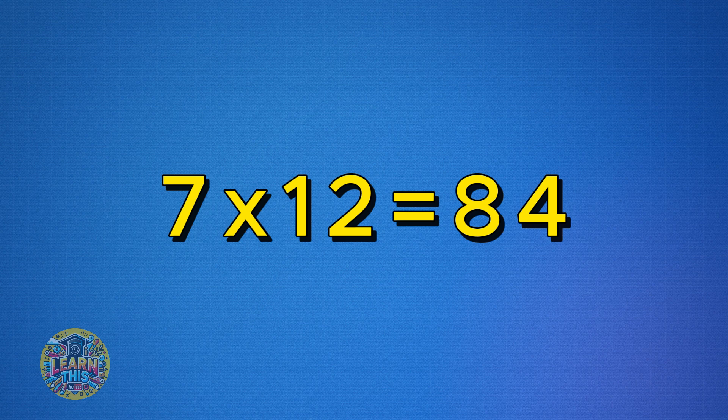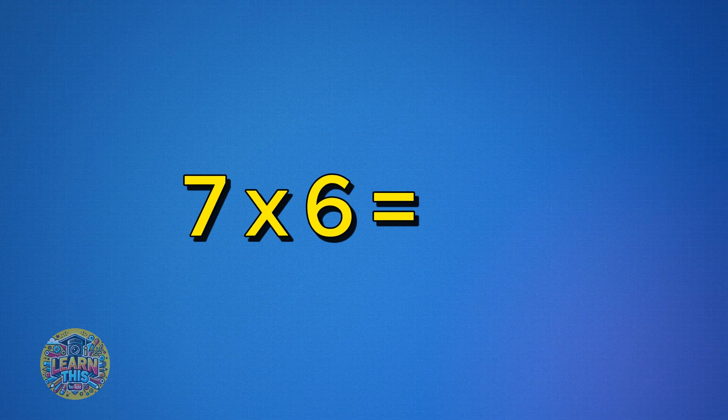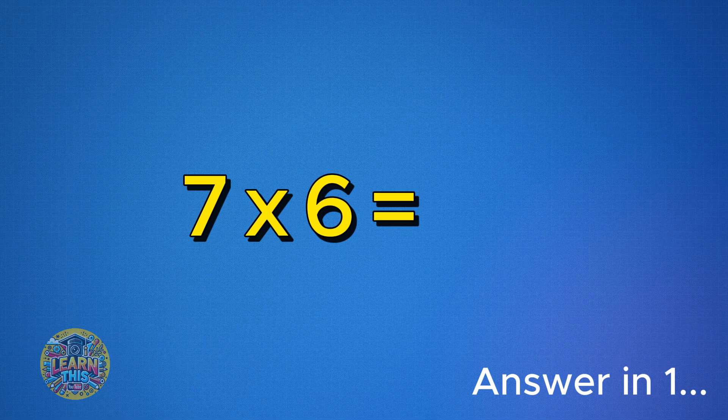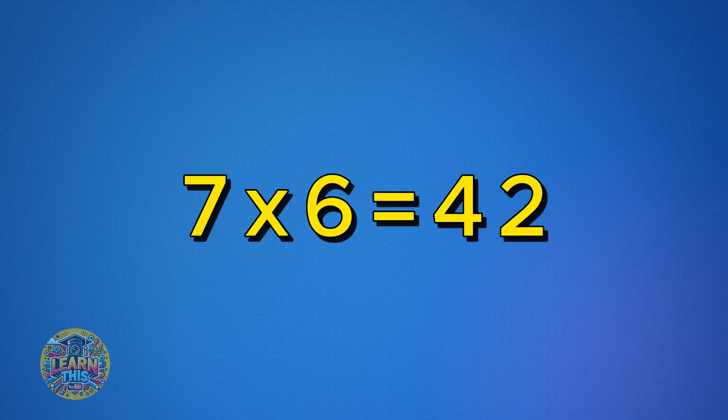Seven times twelve is 84. Let's mix those up and do them again. Seven times six is 42.